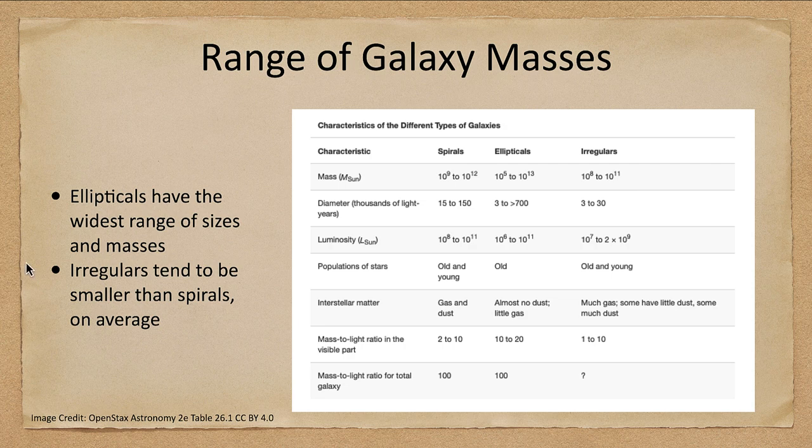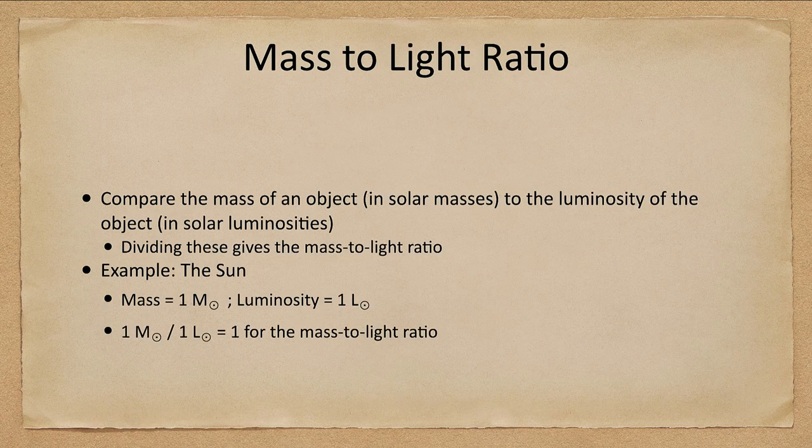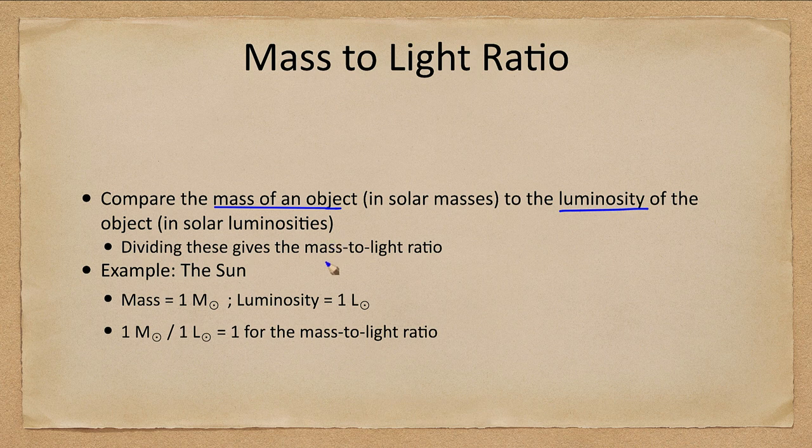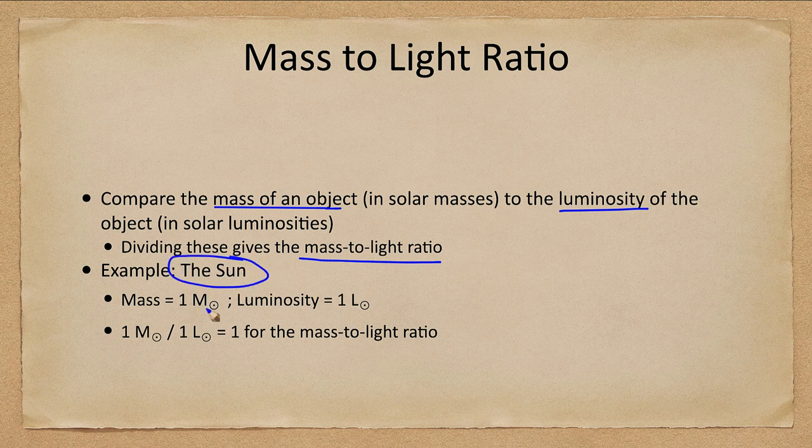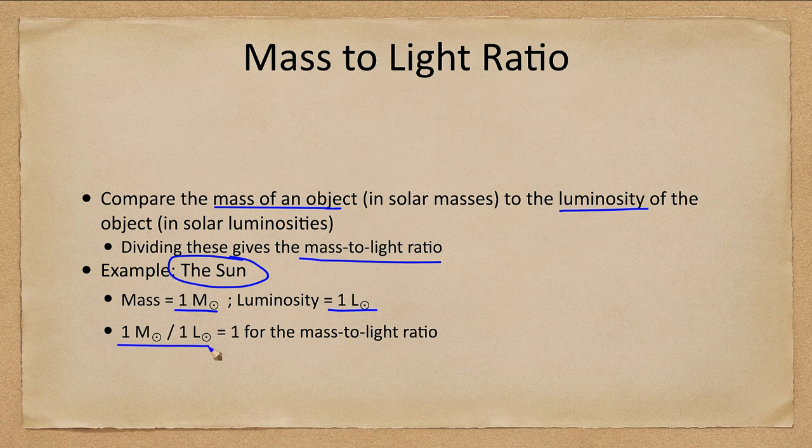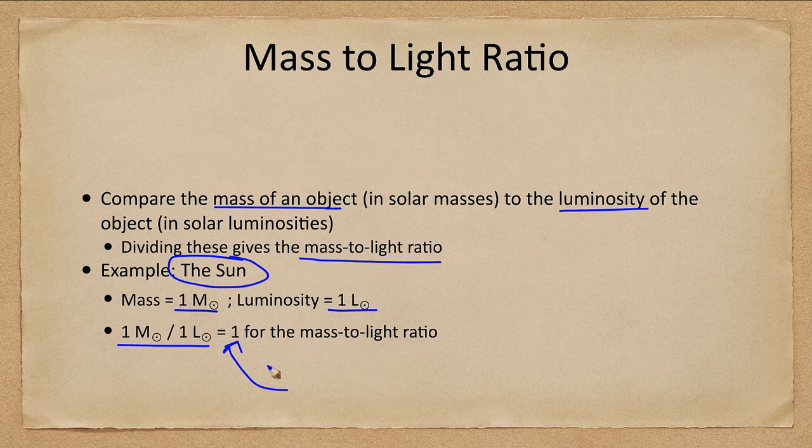So what do we mean by a mass to light ratio? We compare the mass of the object in solar masses to the luminosity of the object in solar luminosities, and we divide these two. That gives us what we call the mass to light ratio. Let's look at an example for the sun. The sun has a mass of one solar mass and a luminosity of one solar luminosity, so one divided by one gives us one for the mass to light ratio of the sun.